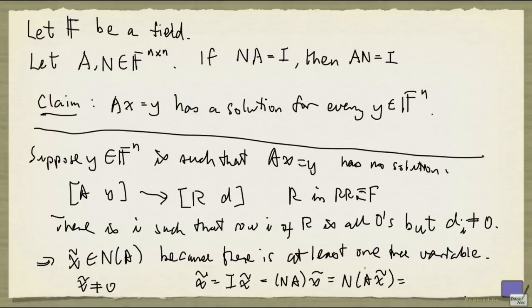And since x tilde is in N of A, this is zero. So this is N times zero, and that's just zero, the tuple of n zeros.